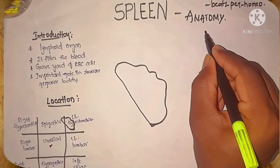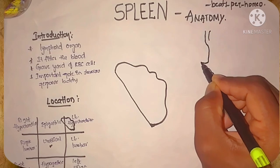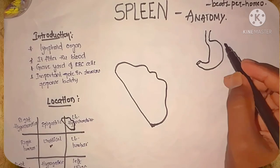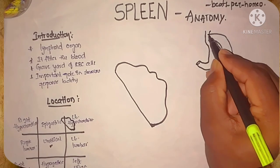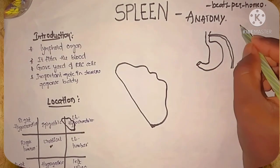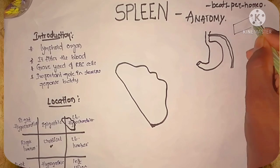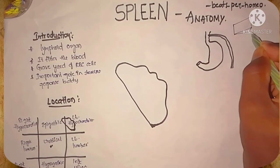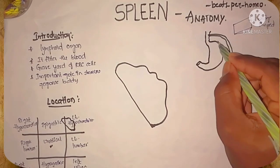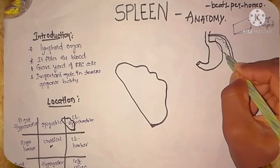Coming to the shape of the spleen. It is wedge-shaped or cord-like, tetrahedral shape. It is wedged in between the fundus of the stomach and the diaphragm.